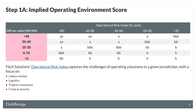The operating environment captures Fitch's assessment of the ability of banks in a given jurisdiction to generate business while taking on acceptable levels of risk. To determine this score, we derive an implied category score using the matrix shown on this slide. The matrix incorporates two core metrics: GDP per capita, and a ranking using Fitch Solutions' Operational Risk Index, which captures the challenges of operating a business in a given jurisdiction.